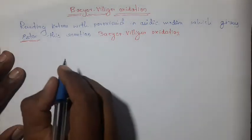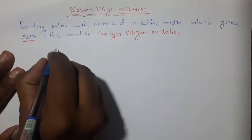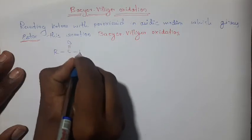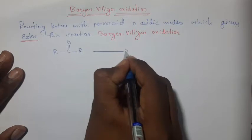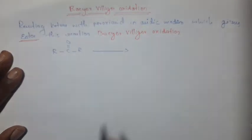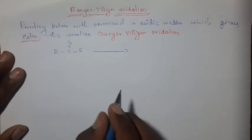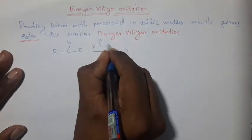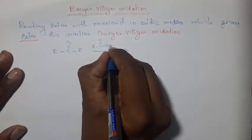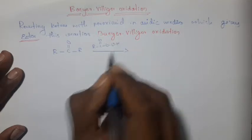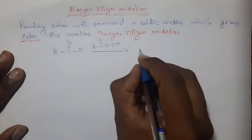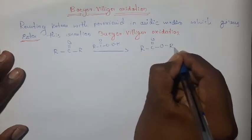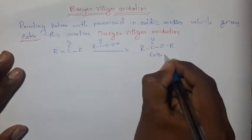In the general reaction, this is our ketone which is reacted with peroxy acid — it may be peracetic acid or perbenzoic acid. This is our peroxy acid, and it gives ester. This is our ester.